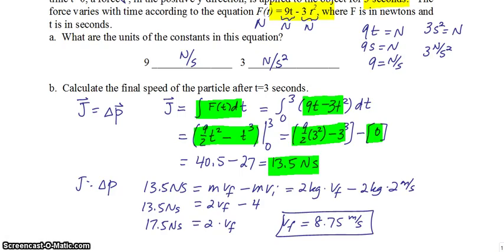That impulse equals the change in momentum, which is mV_f - mV_i. Substituting in the numbers, I got V_f is 8.75 meters per second.